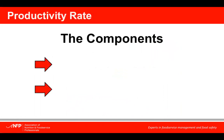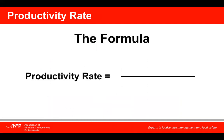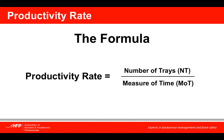One way to show a measurement of the productivity of food service employees is to measure the tray assembly time. This is done by looking at the number of trays and the measure of time. To measure the productivity, you would take the number of trays divided by the measure of time.